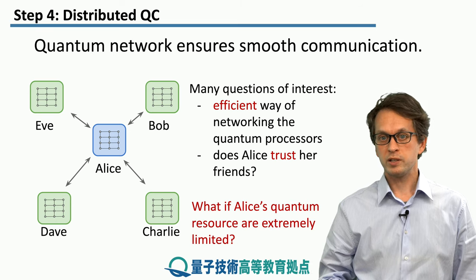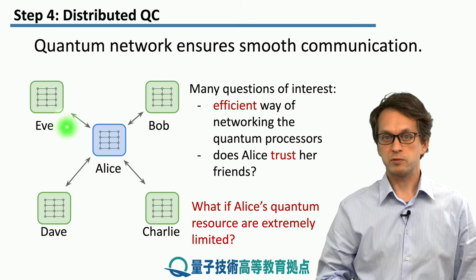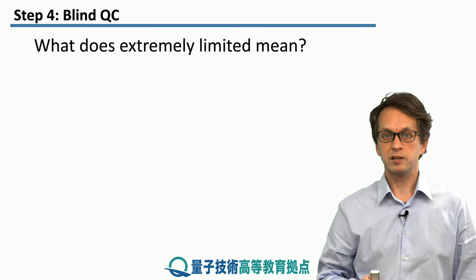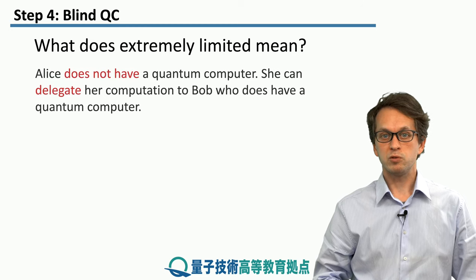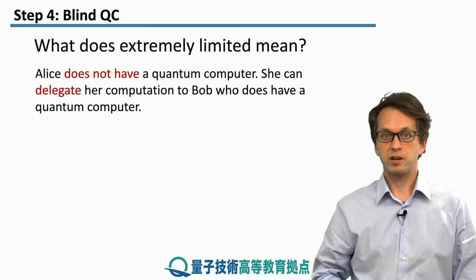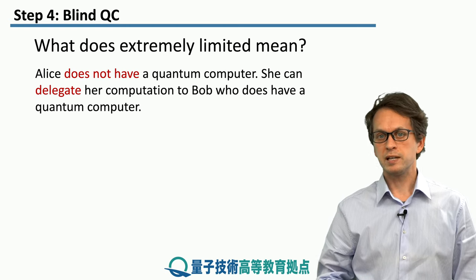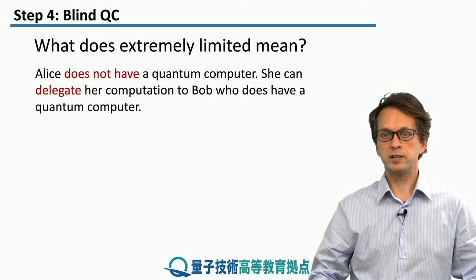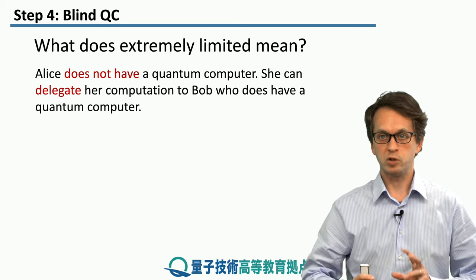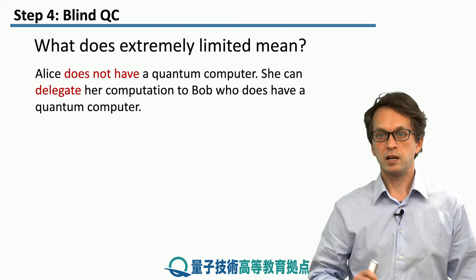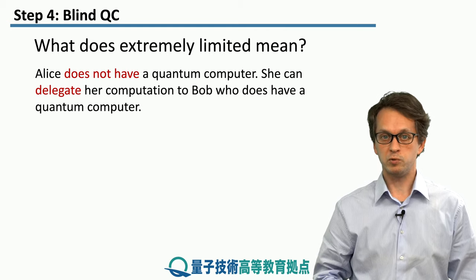Here we assume Alice has some quantum resources, but what if her quantum resources are extremely limited — meaning she doesn't have a quantum computer at all, but would still like to delegate her quantum computation? For simplicity, let's assume that Bob has a full-fledged, very powerful large quantum computer where he can perform any quantum computation that Alice would ask him to do.